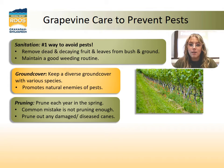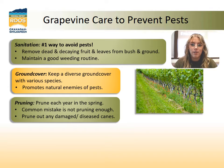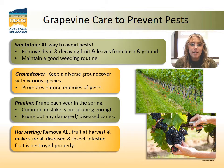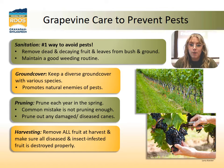At harvest time, it is essential that all fruit is removed and to make sure all disease and insect-infested fruit is destroyed properly. Grape vines tend to have more problems with diseases than pests, and to ensure that you don't have these problems in the following year, one should make sure the fruit is completely used or destroyed.